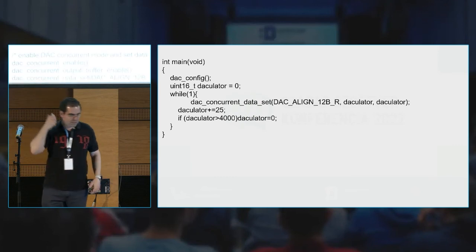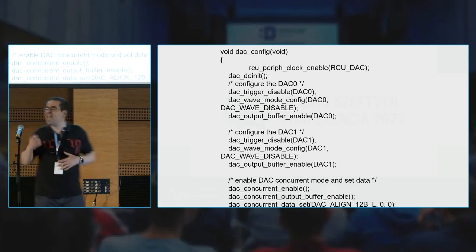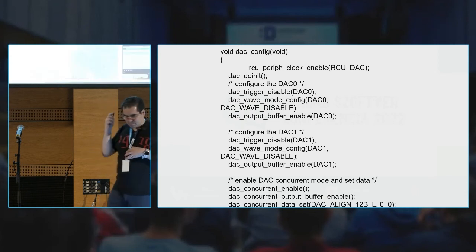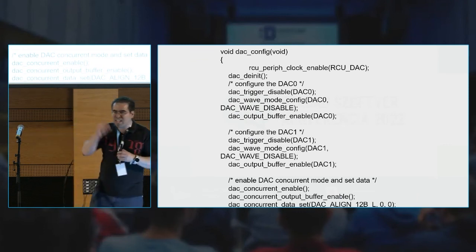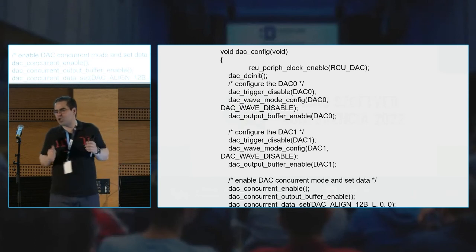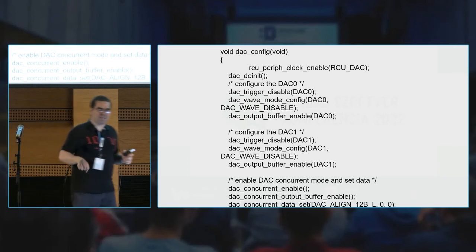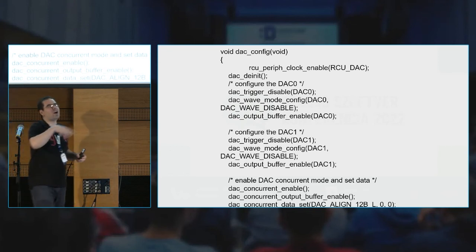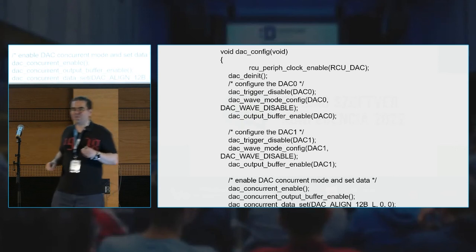It's not like other platforms where you pass a structure through the system. Here it's a bit of a different programming style, but I find it very sympathetic. And here we see the longer example — the initialization of the DAC. Every function we call, trigger disable, wave mode config, and so on, always uses these static constants. This is an important mental switch for those coming from the ESP32, where you have a structure that represents state.